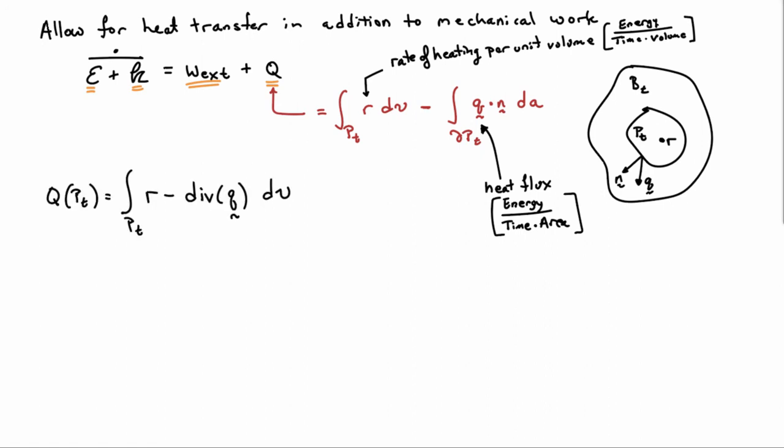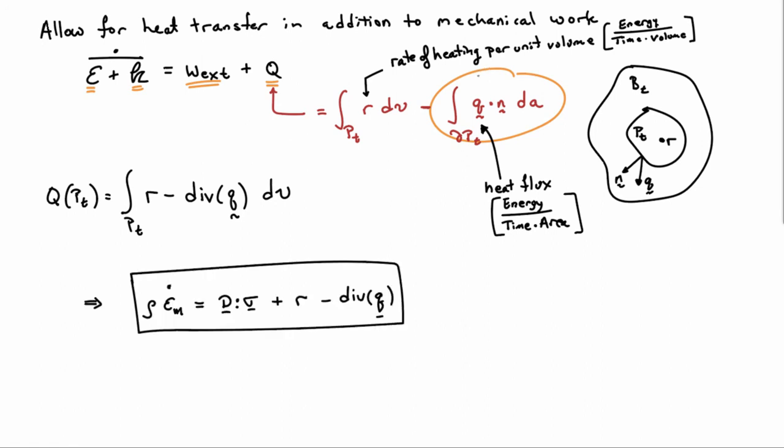The total rate of heat input to the body can be written by applying the divergence theorem to the surface flux term, rewriting it as an integral over the part of r minus divergence of q. Inserting this into the localization theorem framework alongside what we had before, we obtain two extra terms on the right-hand side. The local form of the first law then reads: rho times epsilon_m-dot equals the stress power plus volumetric heating r minus the divergence of the heat flux q.